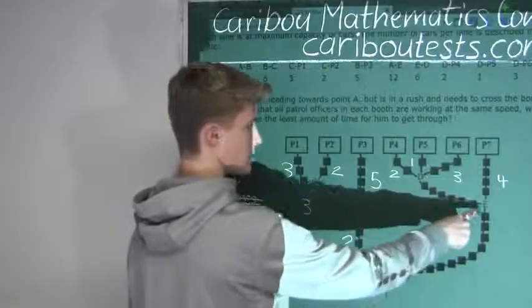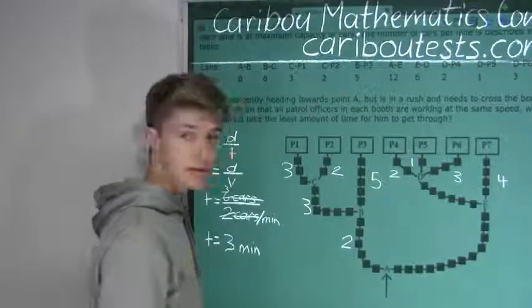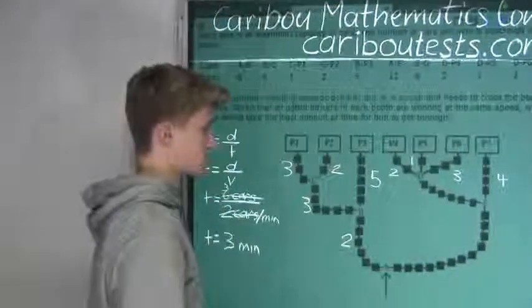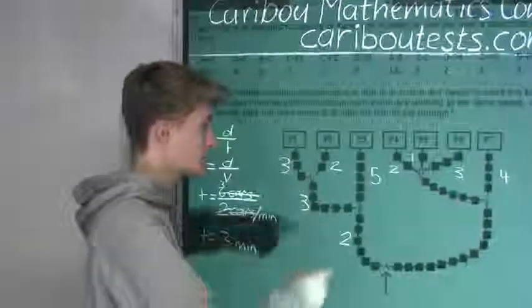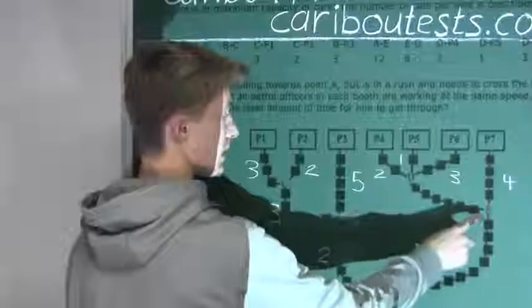And now let's look at the line of cars from E to D. There's one, two, three, four, five, six cars that split up into three booths. So we have six cars divided by three cars per minute is then two minutes to get from E to D.